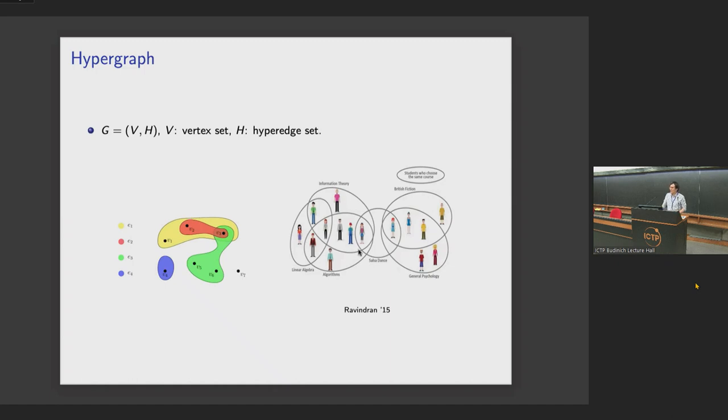On the right-hand side, I give you a reason that hypergraph is useful, because it could be used to model some higher-order relations among data. This shows our students taking different classes, where every hyperedge will be a class. Every student taking different classes will be sharing different hyperedges. And from there, you could have some sort of inference about where they're from. Students taking information theory, linear algebra, algorithm, they might come from one department, and the right-hand side, general psychology or British fiction, they might come from a different department. So based on those data, you could infer some community information.